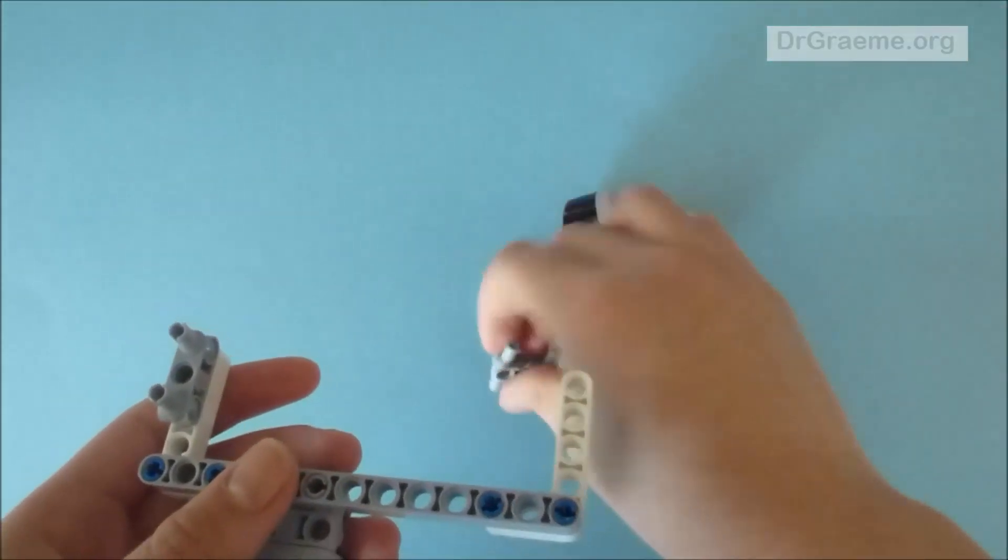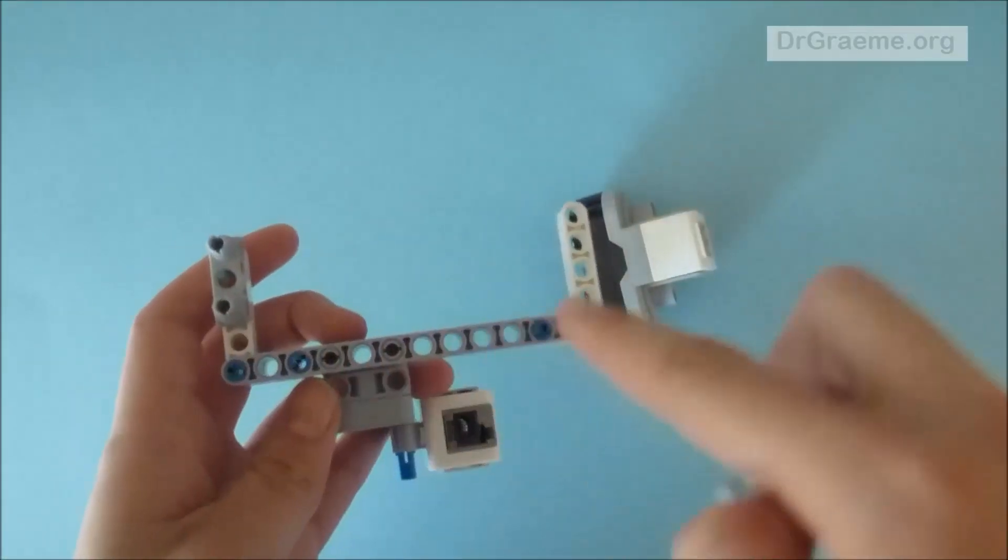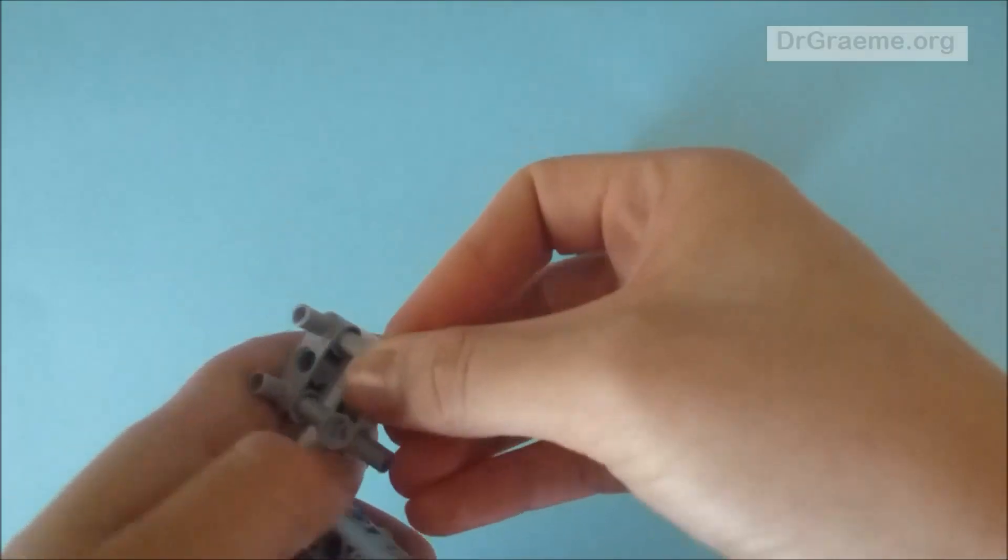Now we're going to take the second H piece and we're going to put it on the inside, so it will be in here.